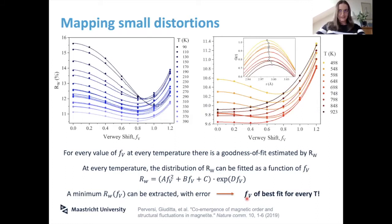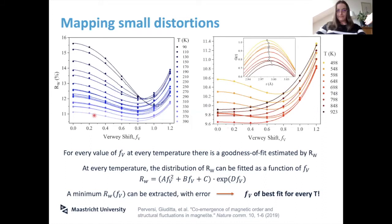The minimum of the Rw distribution is not at zero — it's somewhere else — and it keeps being somewhere else as you warm up, even at high temperature. You really need to go to incredibly high temperatures for this to go away.